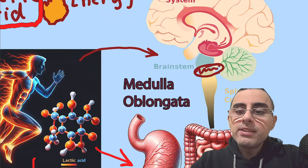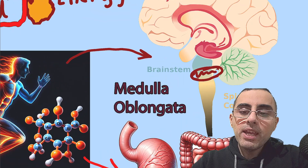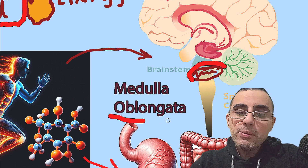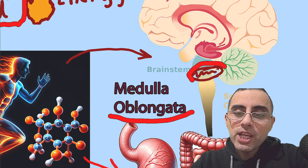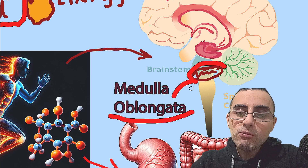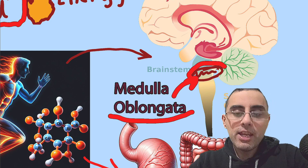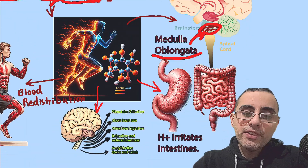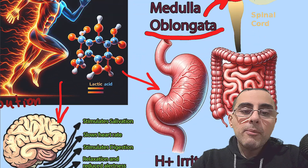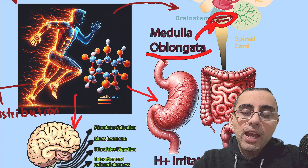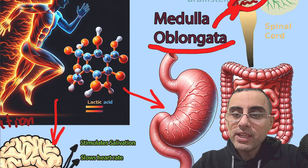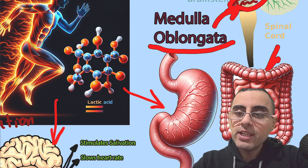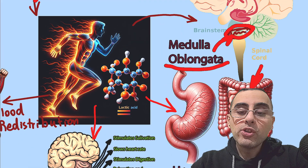Lactic acid also directly affects the brainstem, especially the medulla oblongata, which is responsible for nausea and vomiting. It stimulates these receptors directly, giving a person the sensation of nausea.